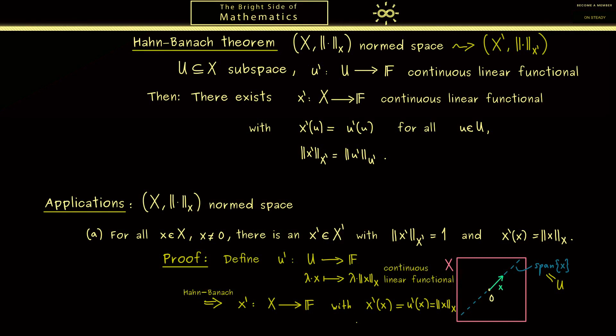In addition the second property is that the norm of x' is the same as the norm of u'. However this is easy to check. It's just one. And with this our proof is finished.